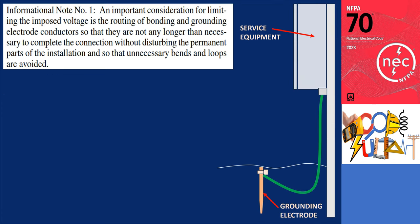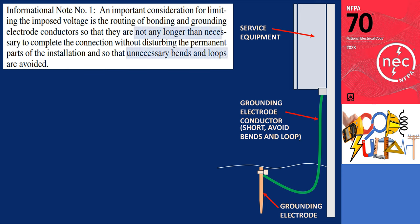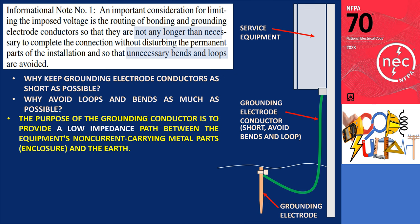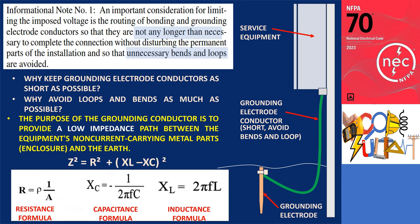Informational Note No. 1 calls attention to the fact that limiting voltage to ground includes keeping grounding electrode conductors as short as possible and avoiding loops and bends as much as possible. The earth grounding conductor aims to establish a low-impedance path between non-current carrying metal components and the earth. The term low impedance encompasses both resistance, which remains constant regardless of signal frequency, and reactance, which varies with frequency.